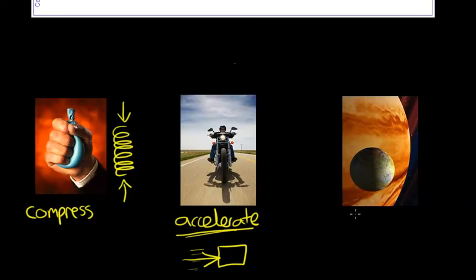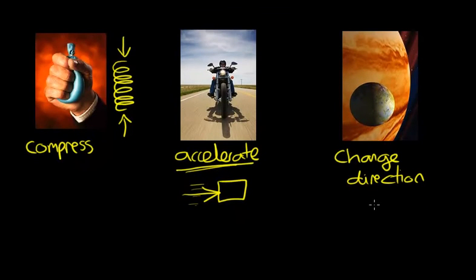And the third thing is that a body when acted on by a force may change direction. Now actually what's happening in the situation where you have a planet orbiting, or a moon orbiting a planet, is that we are accelerating.